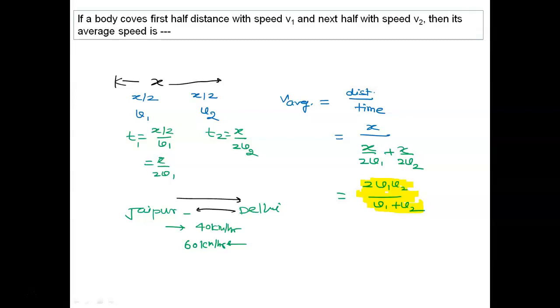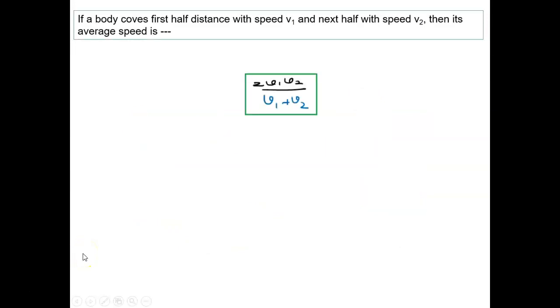So what I will say: 2 times 40 times 60 upon v1 plus v2, that is 100. So the right answer of this problem is 2v1v2 upon v1 plus v2.